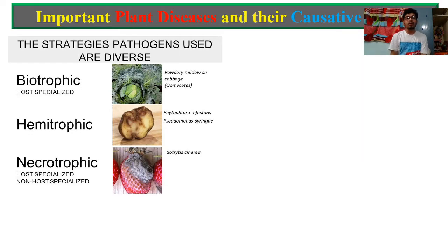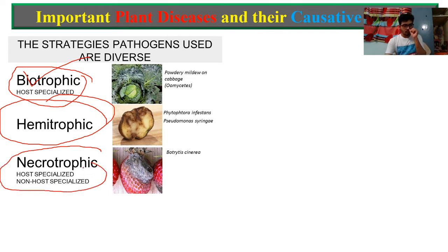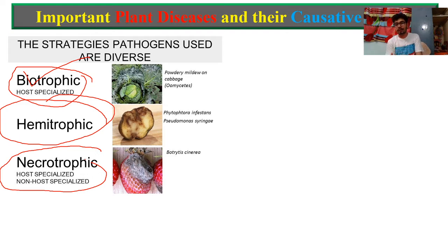First of all, I want to tell you about some important terms. Causative agents — bacteria or pathogens — have biotropic nature, hemibiotropic nature, and necrotropic nature. Pathogens have a special character in that they destroy a particular host. Biotropic, hemibiotropic, and necrotropic organisms are all basically pathogens, but their nature is relatively very different.